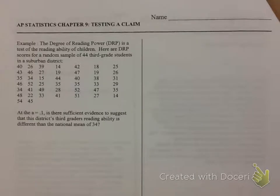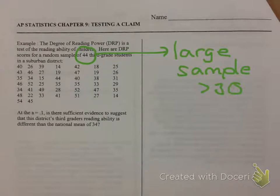In our notes, we have a problem about a degree of reading power test that children take. We're given sample data from 44 third grade students, and we're asked to compare this to the national mean of 34. We have a large sample, so the CLT will apply. We're given an alpha value of 10%, and I want to do something different from the national mean of 34, which will shape my null and alternate hypothesis.